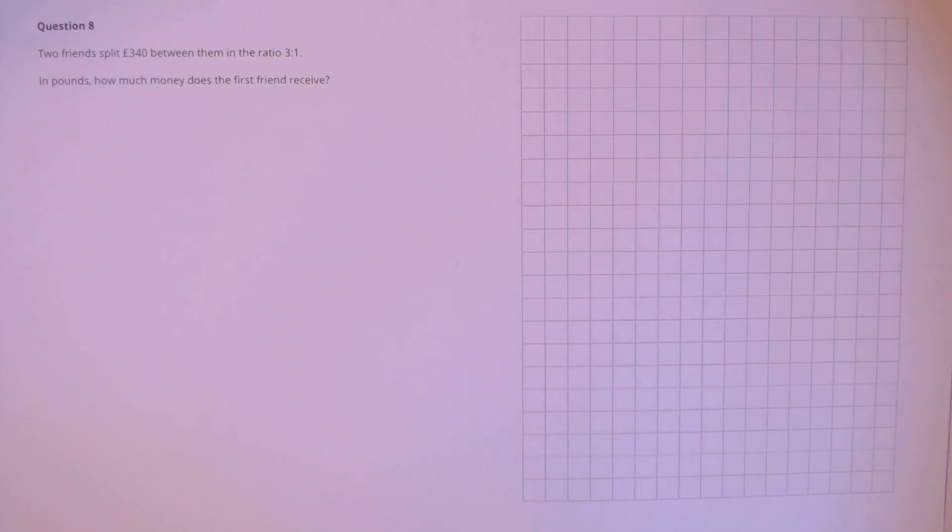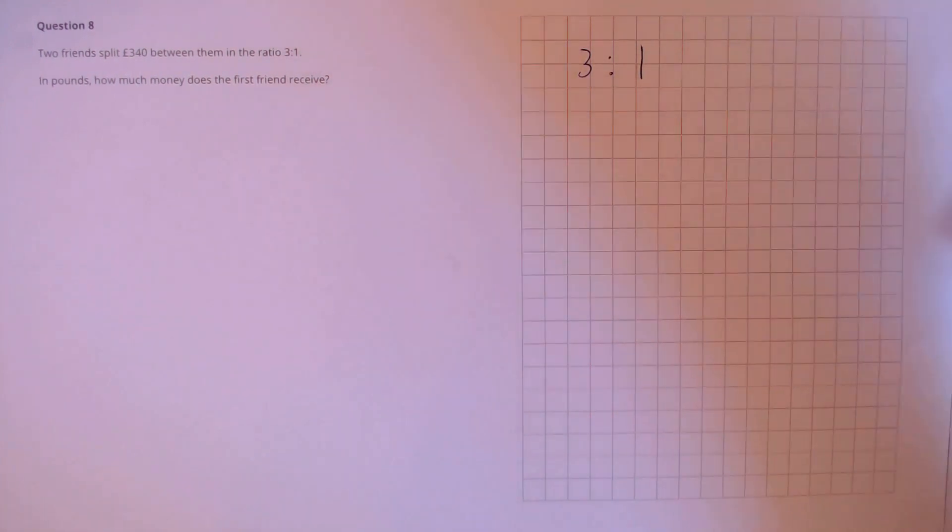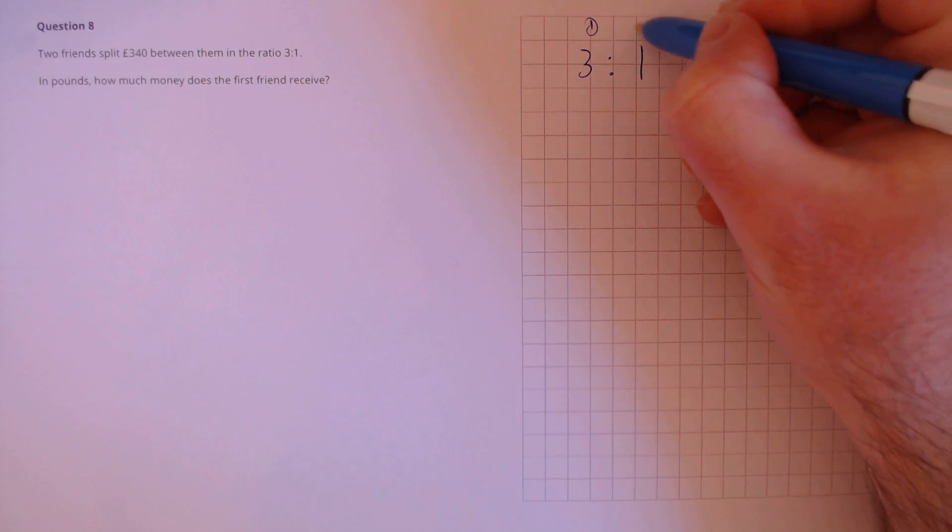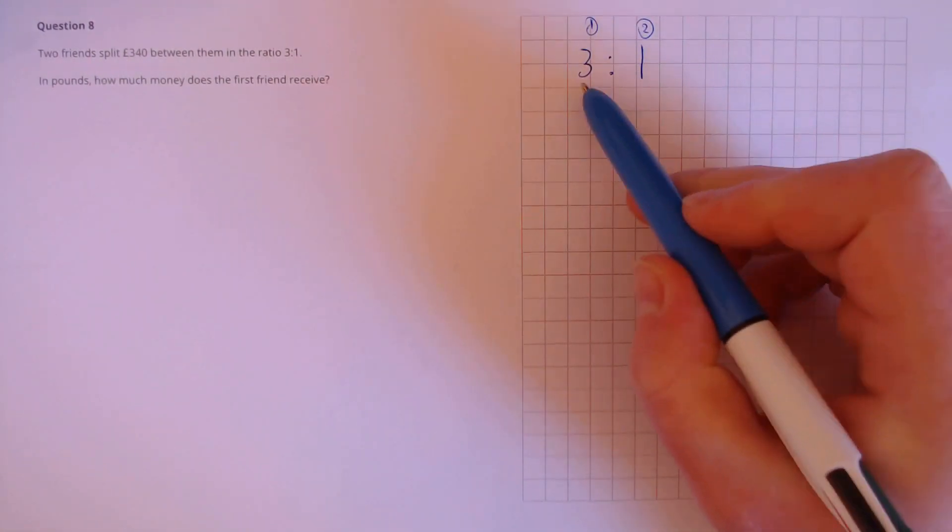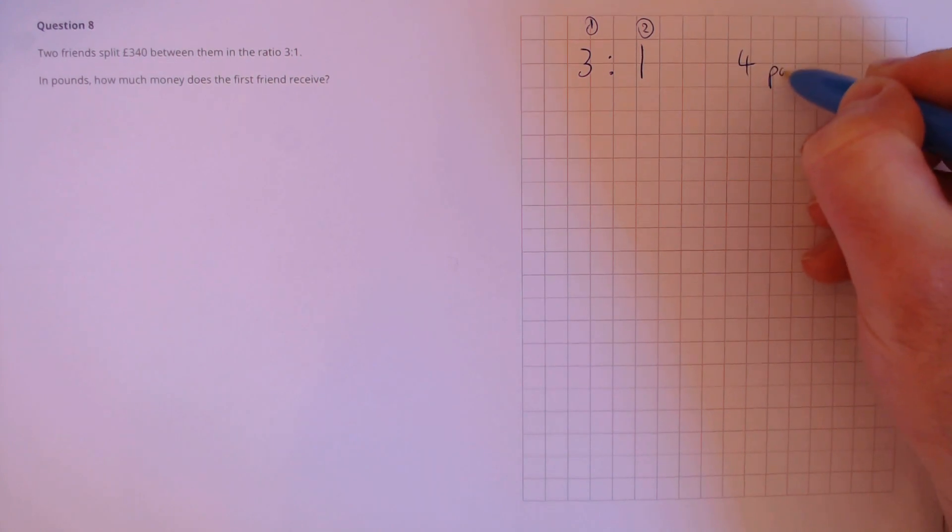Question 8: Two friends split £340 between them in the ratio 3 to 1. In pounds, how much money does the first friend receive? In this ratio, we have four parts. There's three parts here and one part here. That's four parts total.